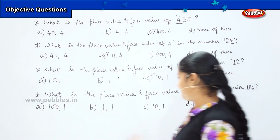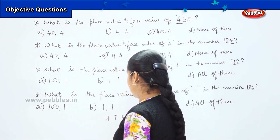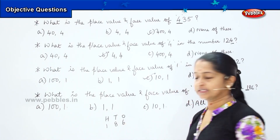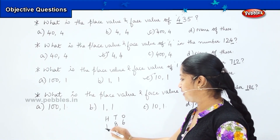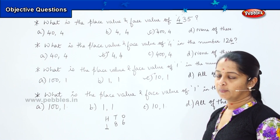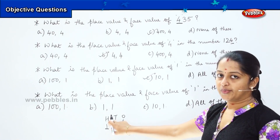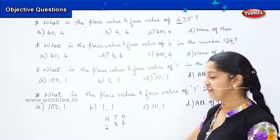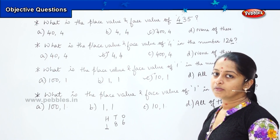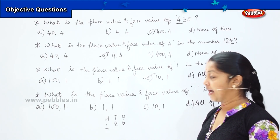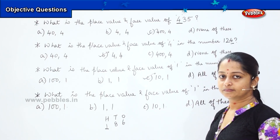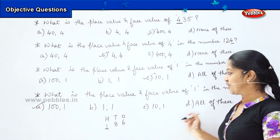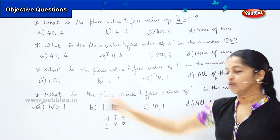What is my first step? You will segregate it in the HTO column and write the number 186. What is the number which we have to find? It is 1. Where is 1 seated? It is seated under the hundreds column. So what is the place value of 1? It is 100. And what is the face value? It remains the same. So my answer should be 100 and 1. That is option A — place value will be 100 and face value will be 1.